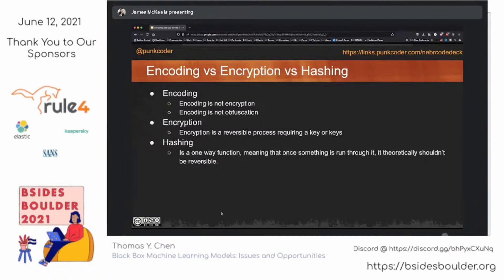A couple of things to handle first: encoding is not encryption. And we see this used in places that is kind of ridiculous — Kubernetes secrets and Docker secrets are still encoded using Base64. There's no actual protection there. Encryption really is the process of producing unreadable text through the use of keys. And then hashing is a one-way function where we can feed something in and it becomes almost impossible to get it back out, except for example with the use of rainbow tables.